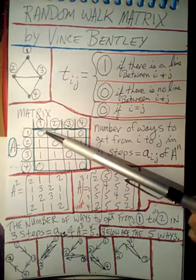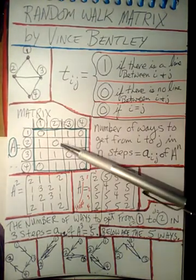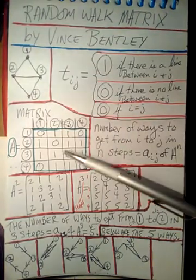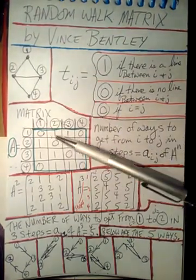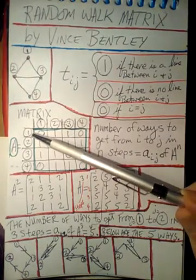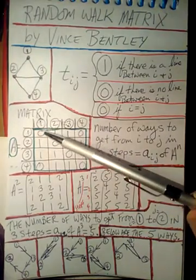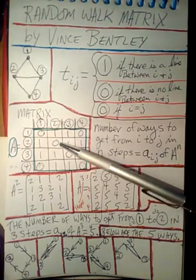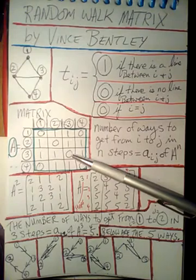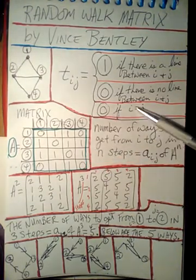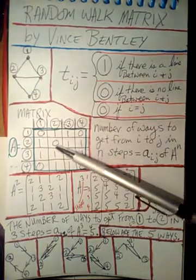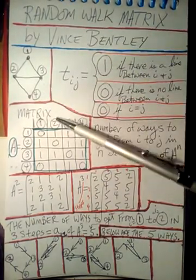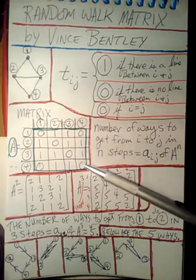Next we'll handle the diagonal elements. The third rule is: if i equals j inside the matrix, we put a 0. So the elements 1,1 and 2,2 and 3,3 and 4,4 all get zeros along the diagonal. In a random walk matrix, all the diagonal elements will always be zeros.